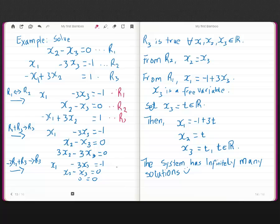So R3 is true for every x1, x2, x3 in R. The third row is always true. From row 2, we have that x2 equals x3. And from row 1, we have that x1 equals negative 1 plus 3x3. So x3 is a free variable. So if we set x3 to be some parameter t, then we end up with a parametric representation of the solution set: x1 equals negative 1 plus 3t, x2 equals t, and x3 equals t, where t is a real number. So we say the system has infinitely many solutions.